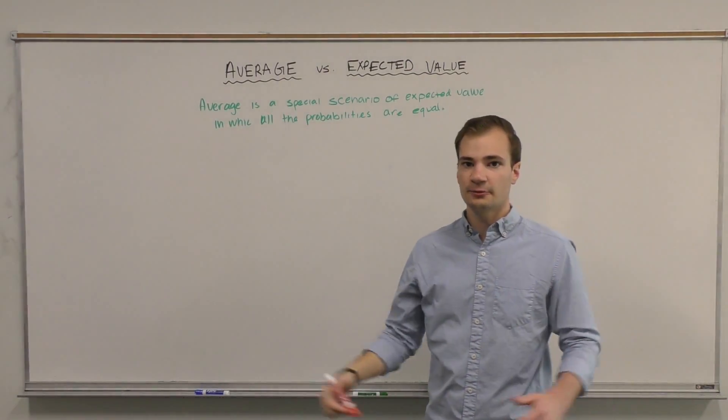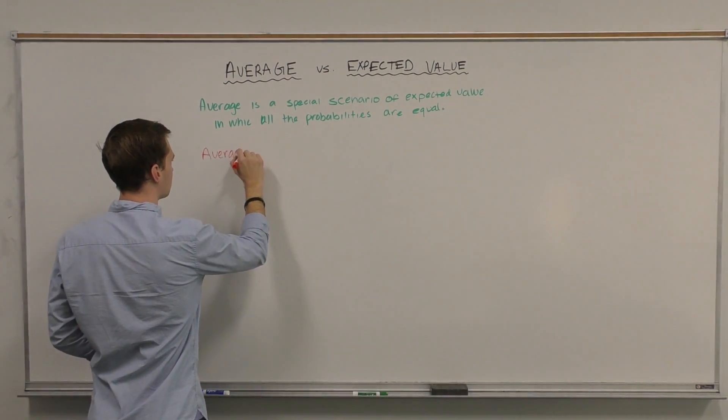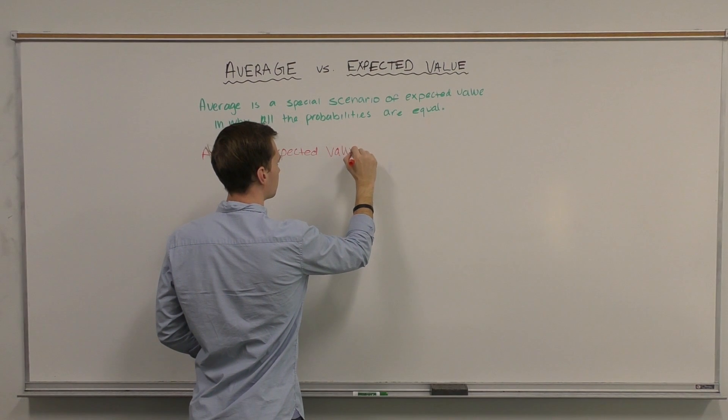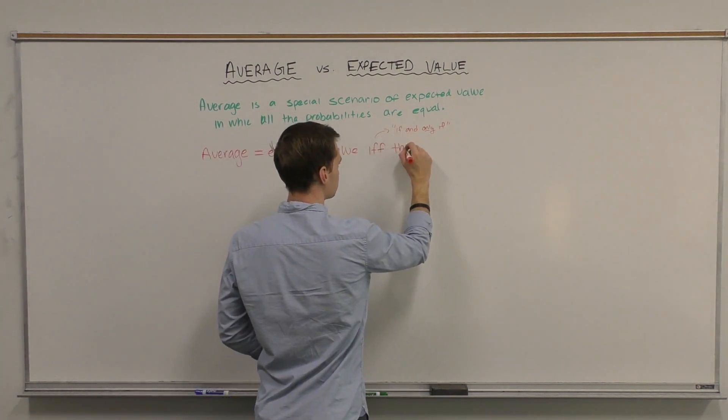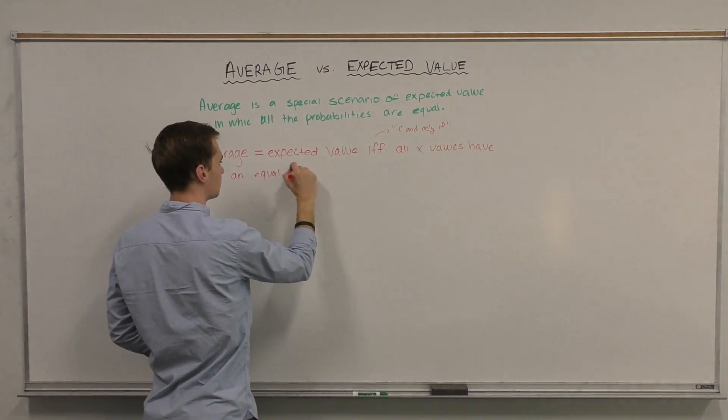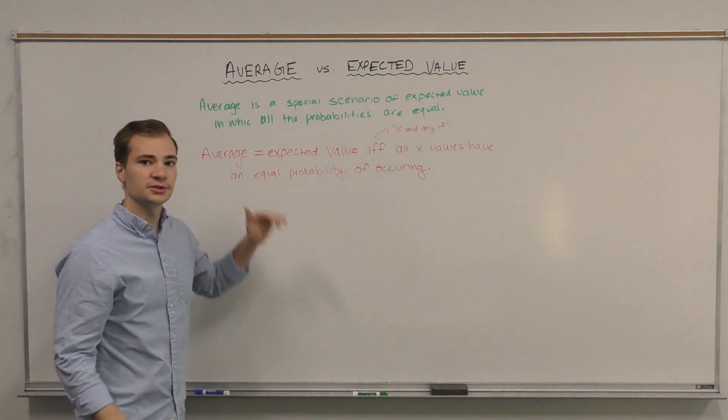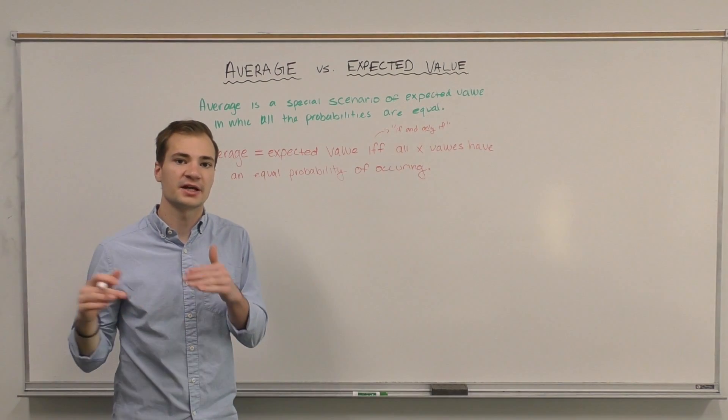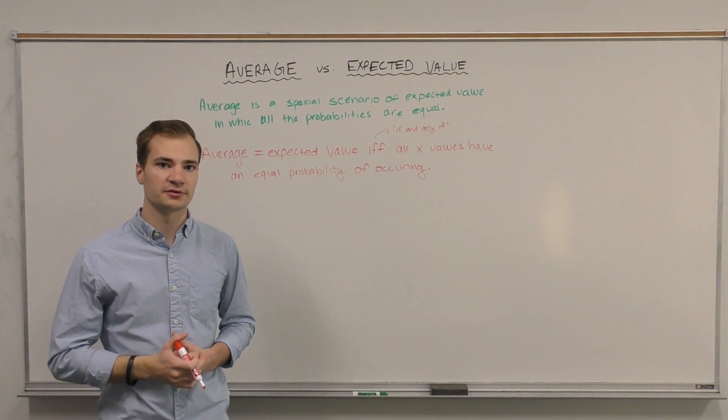The main takeaway from today is: the average will equal the expected value if and only if all the x's have an equal probability of occurring.